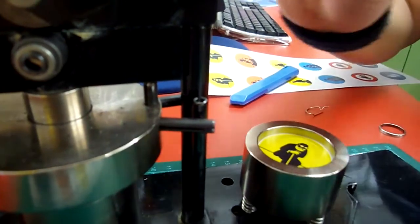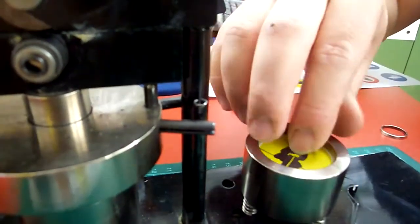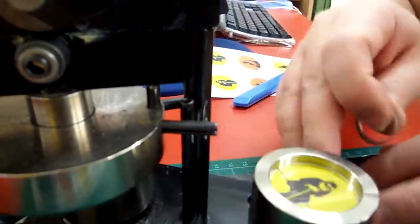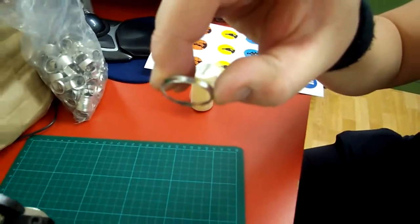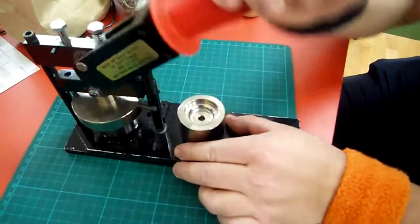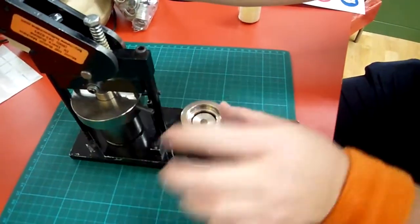Then you have a Mylar sheet to protect the button. You turn around, put this backing ring in with the sharp side up, and then you crush it.